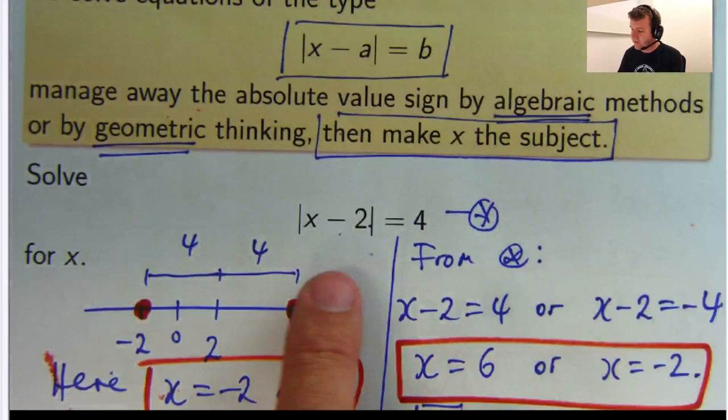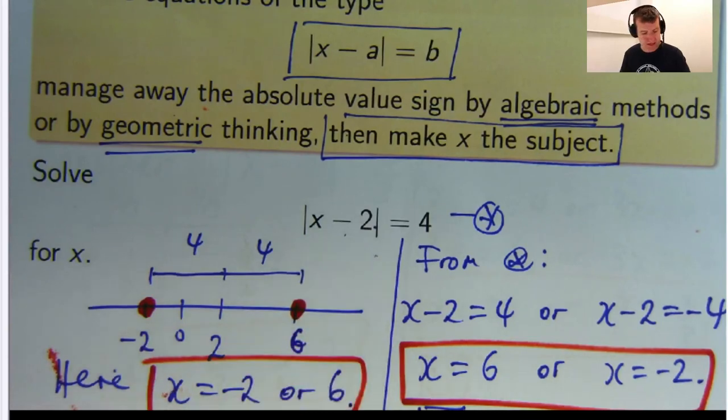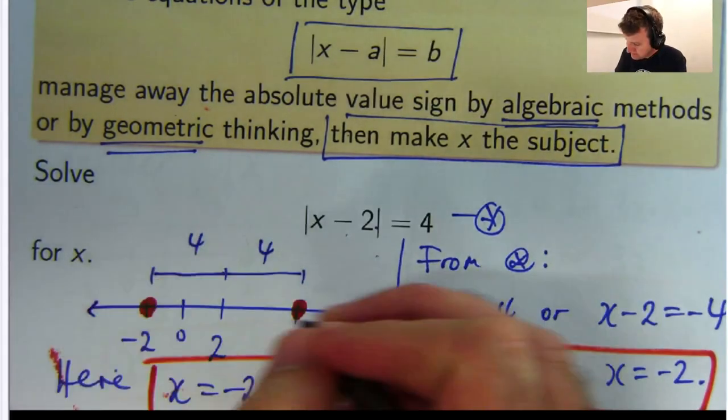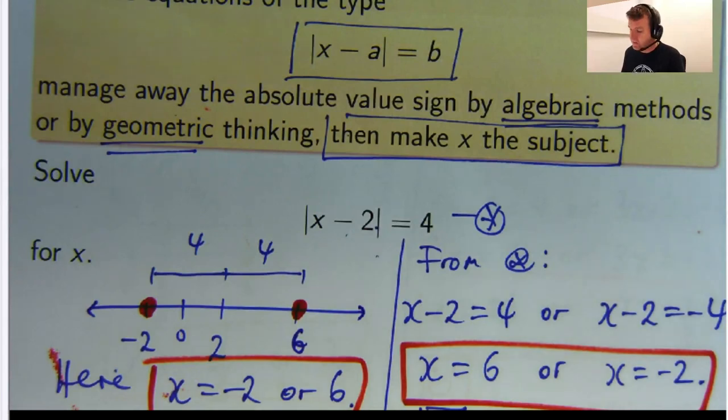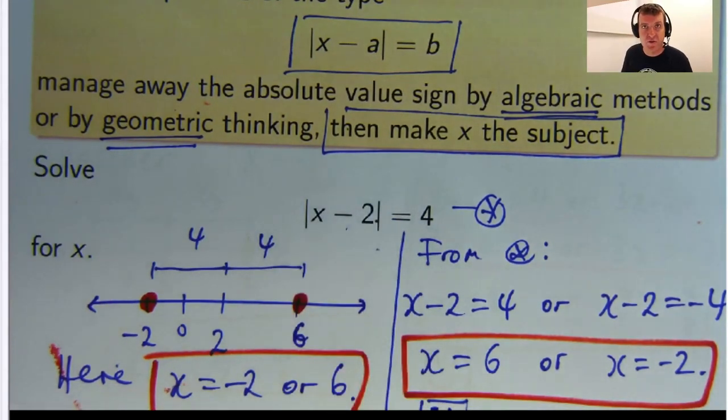Now, there is another way of drawing this without the number line here. You could, if you wanted to, sketch the absolute value of the graph x minus 2 in the xy plane. Draw a horizontal line, y equals 4, and see where they hit each other. But I'll leave that for you to do.